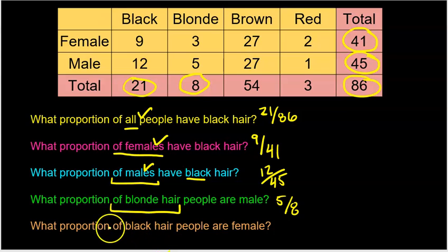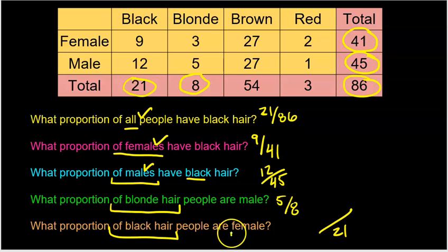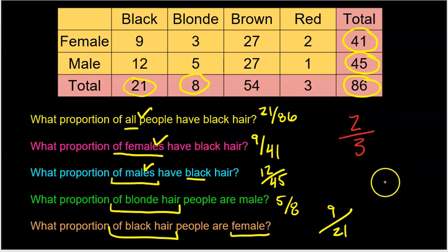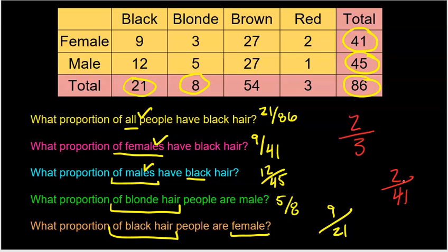What proportion of black-haired people are female? The condition is black hair — 21 people — so 9 out of 21. Compare that to: of the people with red hair, what proportion are female? Three have red hair, two are female: 2 out of 3. But if I said of the females, what proportion have red hair? Now I'm looking at 41 females, 2 have red hair: 2 out of 41. The word 'of' determines the condition and therefore the denominator.